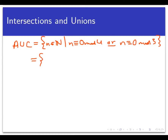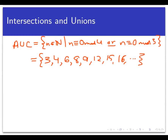Let's write this in roster notation to help us think about it. To say an integer is 0 mod 4 means 4 divides that integer, and 0 mod 3 means 3 divides N. The smallest element of that set is 3 — remember, 0 is not a natural number. Then 4 belongs from set A. 5 is neither 0 mod 4 nor 0 mod 3, so it's excluded. Then 6, then 8 (congruent to 0 mod 4), then 9, 12, 15, 16, and so on. The roster notation helps see what's in the set, while set builder notation reveals what those numbers have in common.